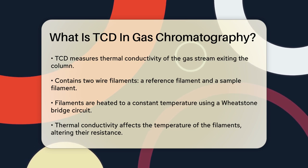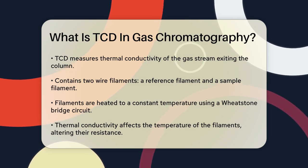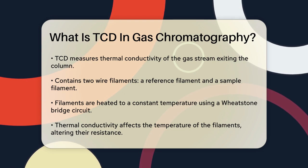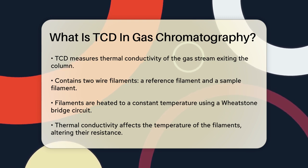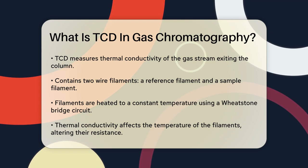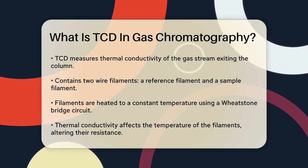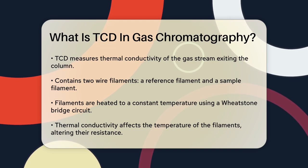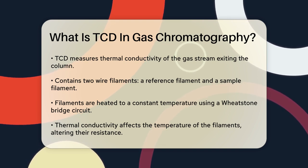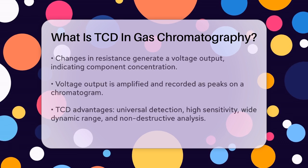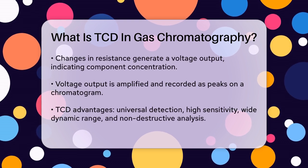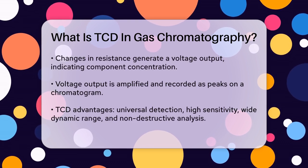If the gas has high thermal conductivity, it cools the sample filament faster than the reference filament, which decreases the resistance of the sample filament. On the other hand, if the gas has low thermal conductivity, it cools the sample filament slower, increasing its resistance. The Wheatstone bridge circuit detects this change in resistance and generates a voltage output that's proportional to the difference in resistance between the two filaments.